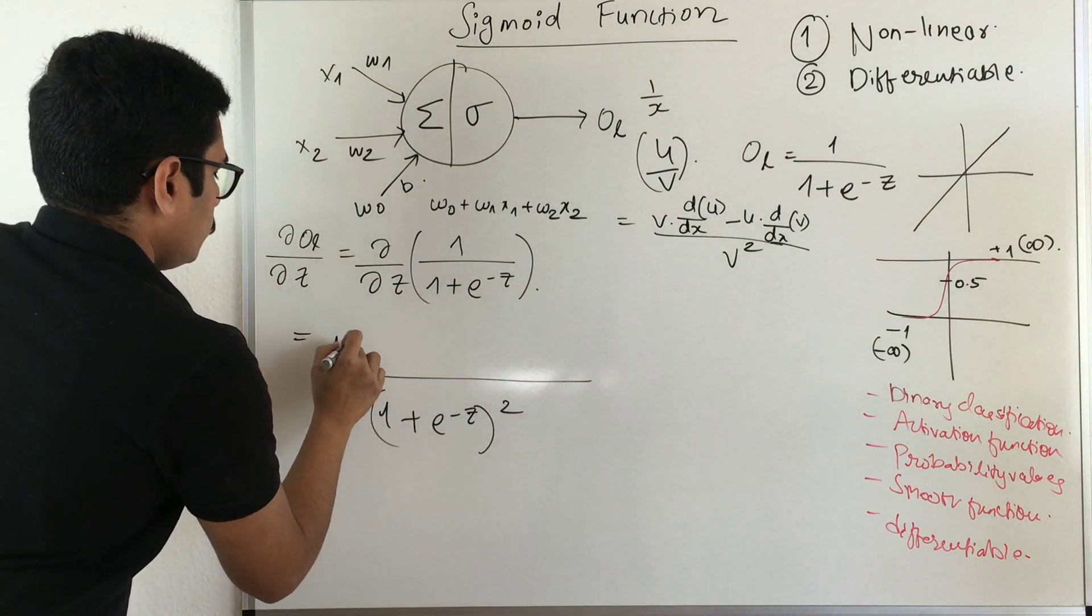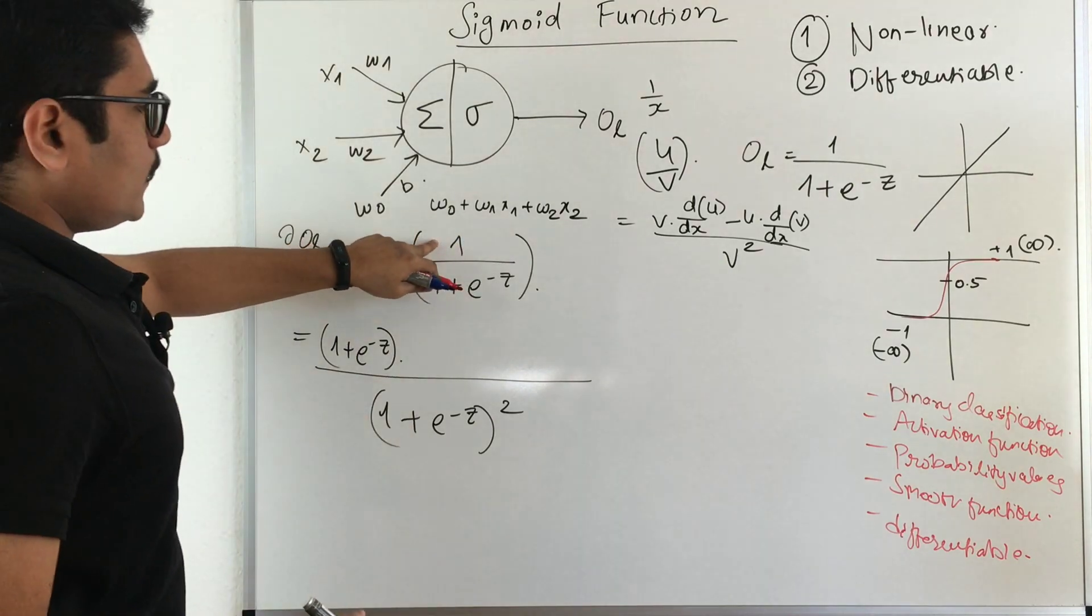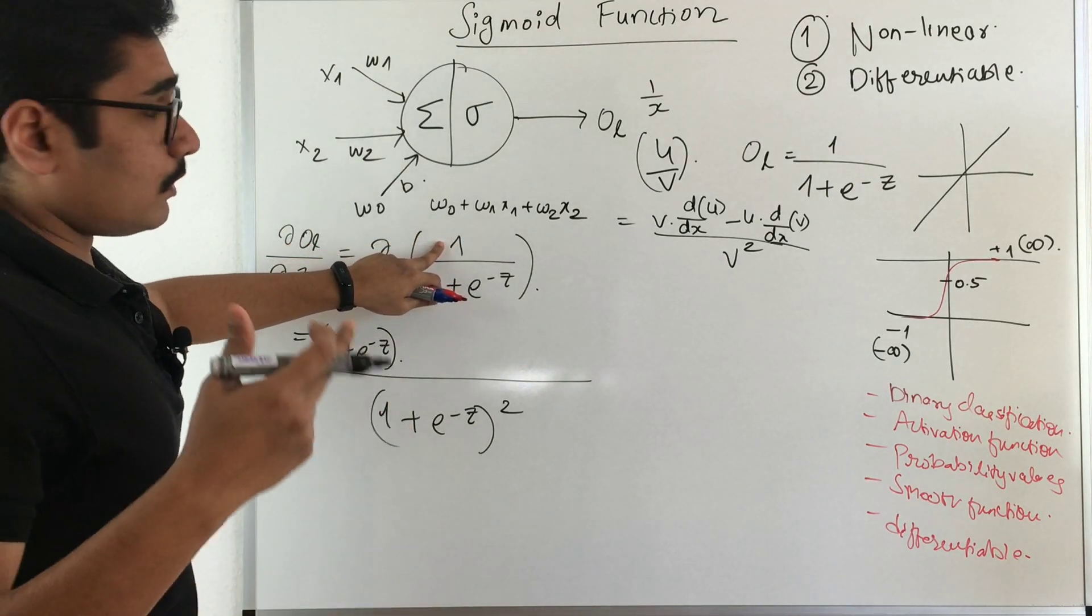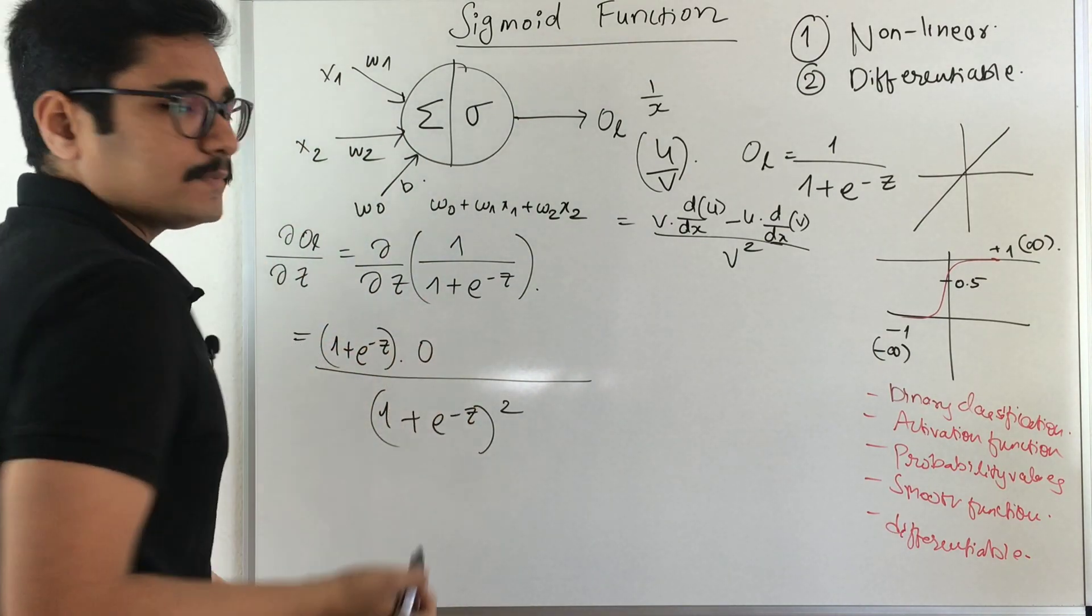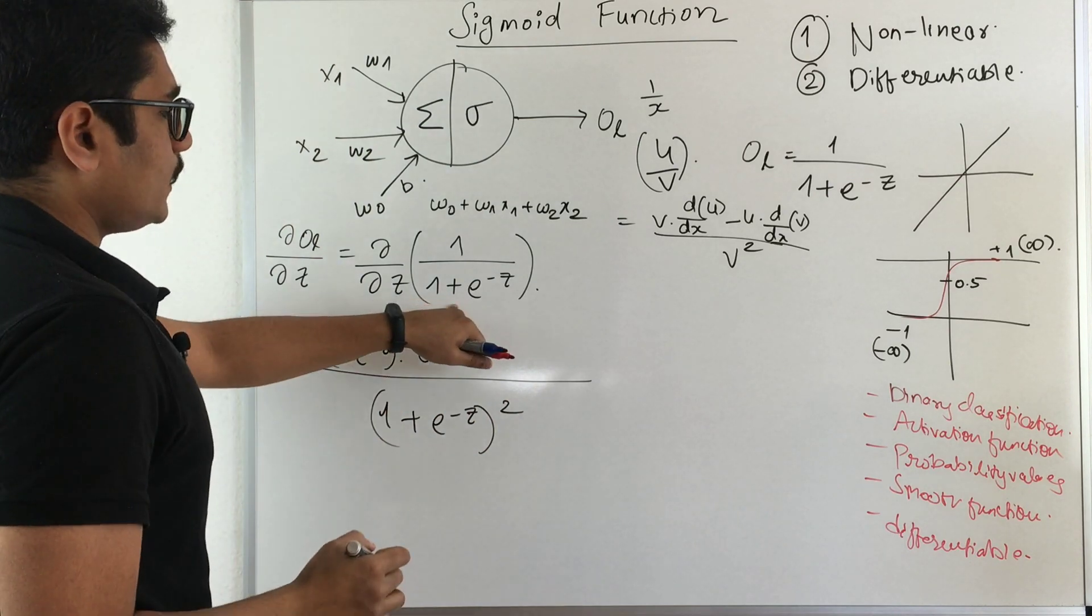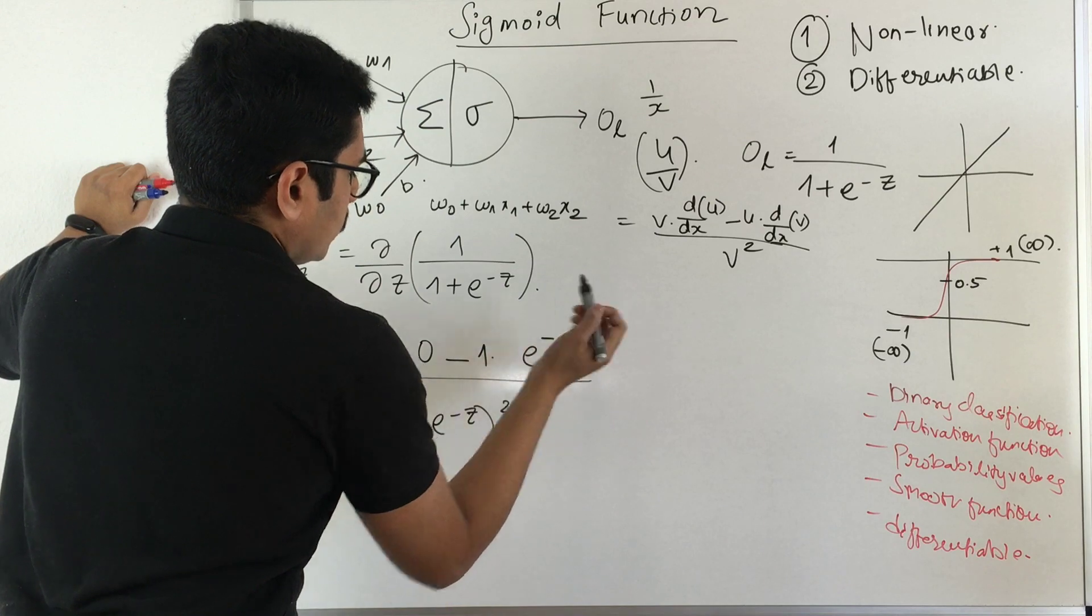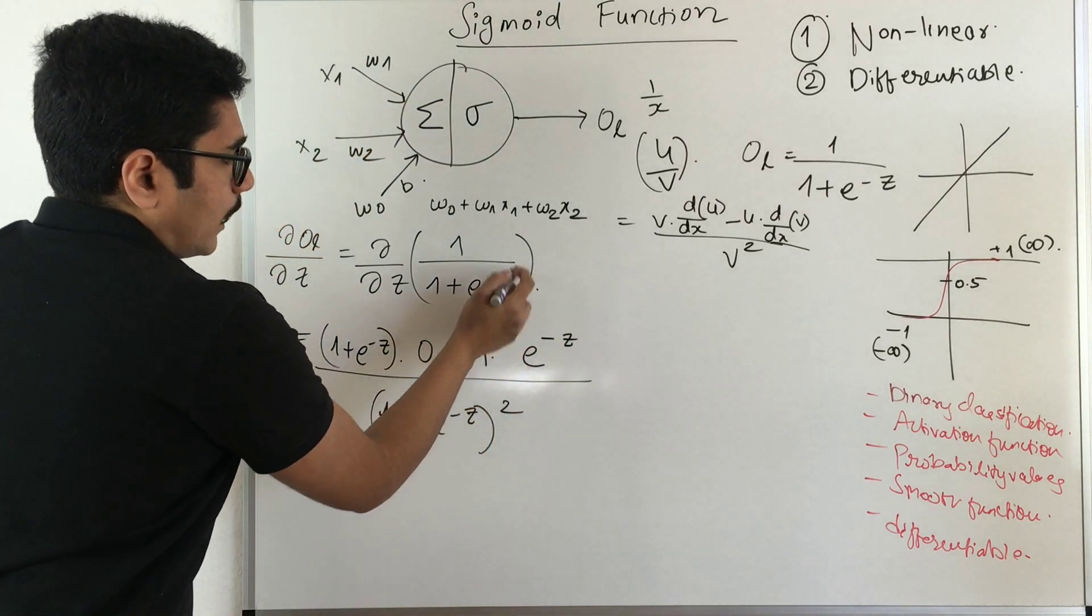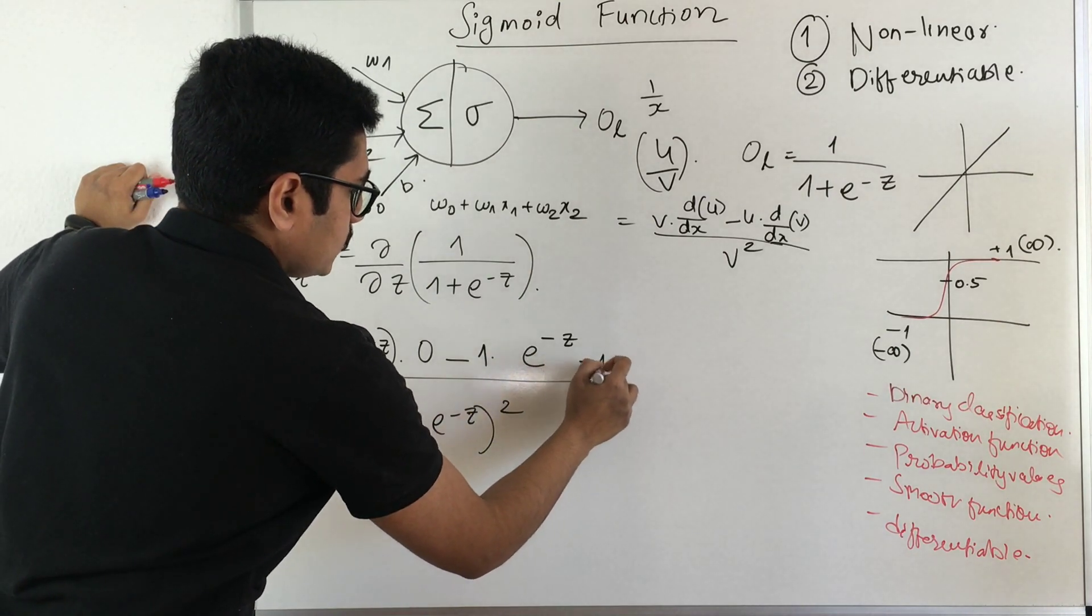We write it as denominator square. First you have denominator, then derivative of numerator. Now numerator is not holding any terms in z, so it becomes 0 minus numerator times derivative of denominator. The derivative of e^(-z) is e^(-z), and you have a chain rule for -z, so that becomes -1 here.